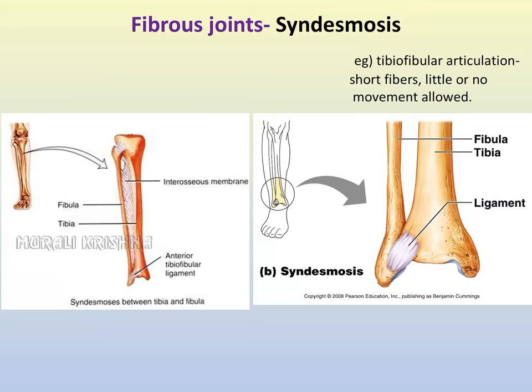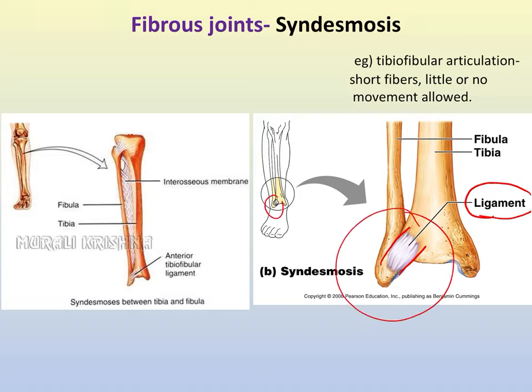Our second fibrous joint is a syndesmosis, which is another word for ligament. When you bind two bones together, the connective tissue is our ligament — dense regular connective tissue. We find this between the radius and ulna and also between the tibia and fibula. The distal end of the tibia and fibula, at our ankle, is an example.